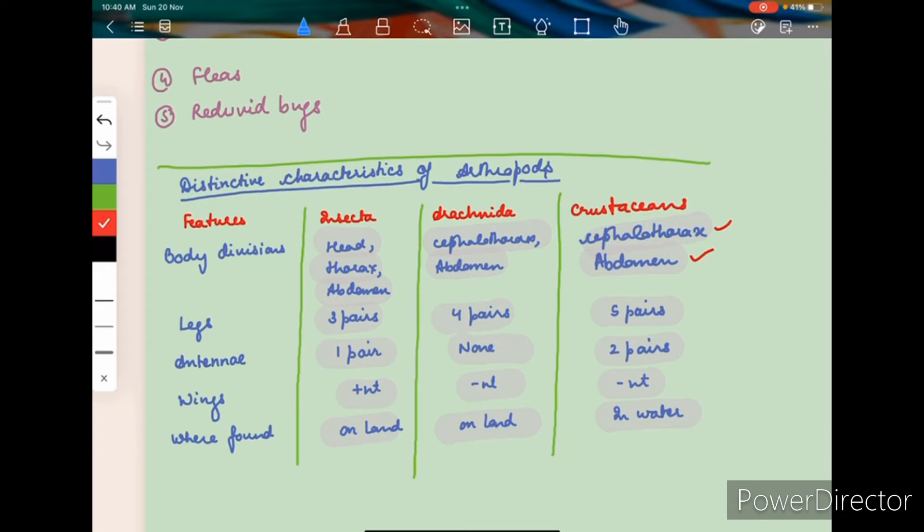But coming to Crustaceans, they have got cephalothorax and abdomen, two body divisions. They have got five pairs of legs, at least 10 legs. They have two pairs of antennae, that is four antennae. The wings are absent and they are found in the water.